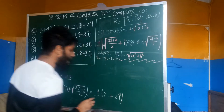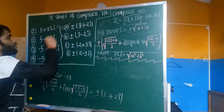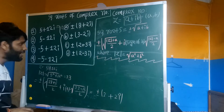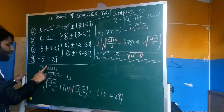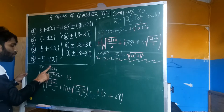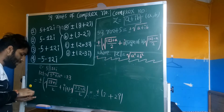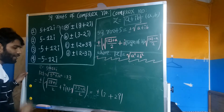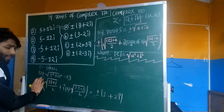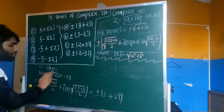Question A is equal to 1 number. The second question is minus 5 minus 12i. If b is minus 12 then the sign is minus.